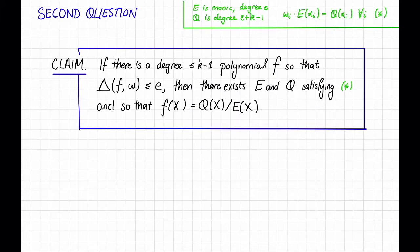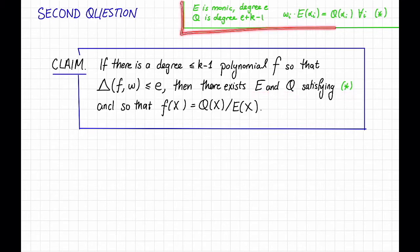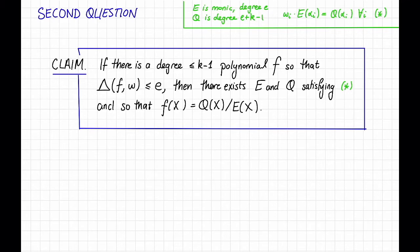Let's answer the second question first. I'm going to make the following claim. The claim is that if there is some degree at most k-1 polynomial f that is within distance e of w, then there exists polynomials E and Q satisfying star from the previous slide. We want E to be monic of degree e, Q to be degree e plus k minus 1, and the condition to hold for all i. Furthermore, f(x) is equal to the ratio of Q and E. Let's prove this claim — we basically already proved it when we talked about the idea, but let's do it a little more formally.